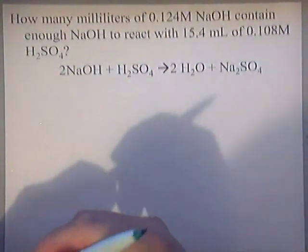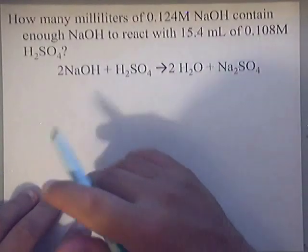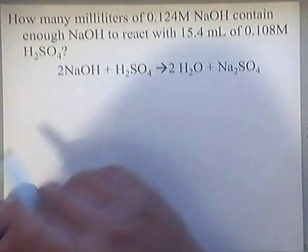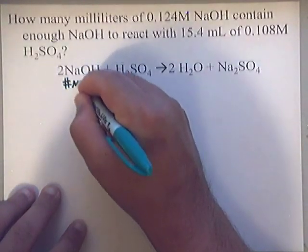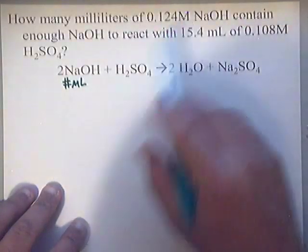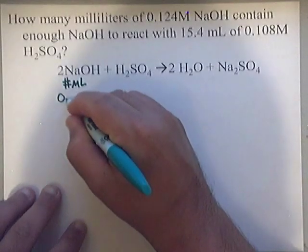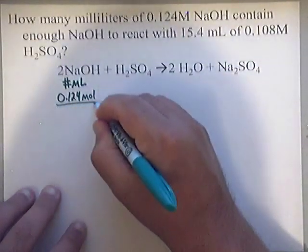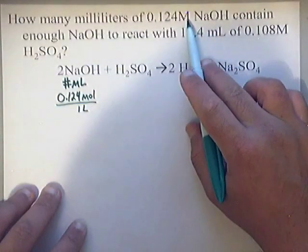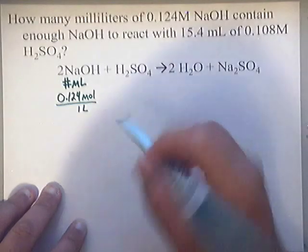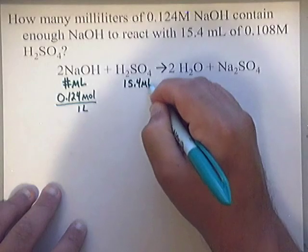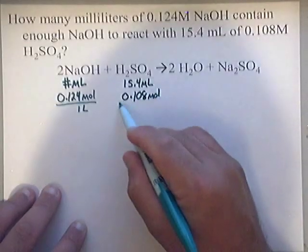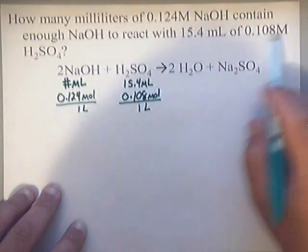Let's go ahead and start labeling the given information. They're asking how many milliliters of NaOH, so I'll put a question mark in mL there. The concentration of NaOH I'll write as 0.124 moles over 1 liter — because molarity can be used as a conversion factor. Then they give 15.4 milliliters of H₂SO₄ at a concentration of 0.108 moles over 1 liter. Make sure you change the big M's to moles over liters.